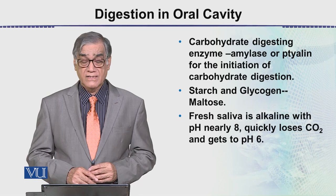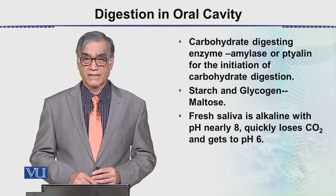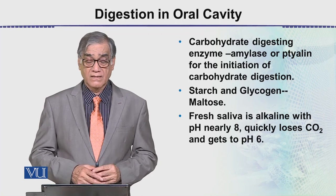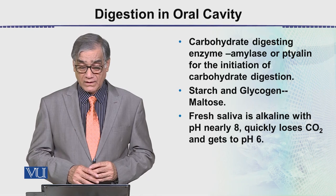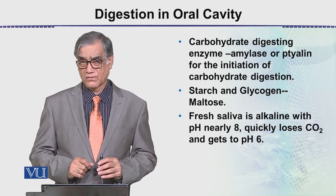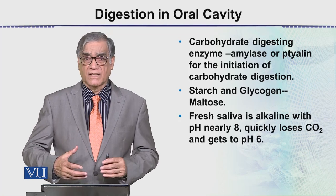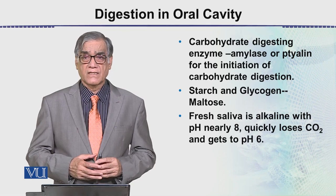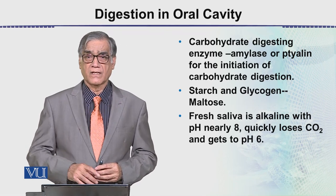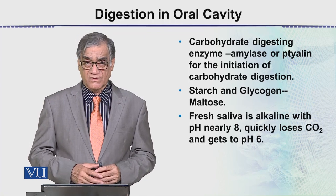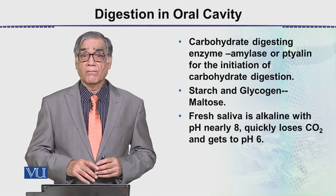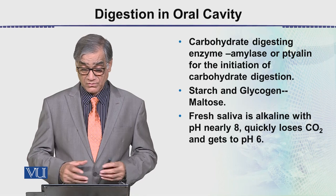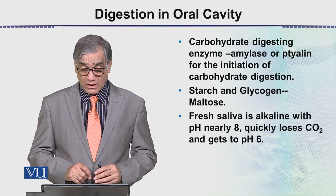The most important carbohydrate-digesting enzyme in the oral cavity is amylase, which is also called ptylin. It initiates carbohydrate digestion, which starts in the mouth. The major part of our food contains starches, and these starches — which are polysaccharides — are converted into maltose, which is a disaccharide. Glycogen, which is the animal starch, also begins to be digested into maltose.